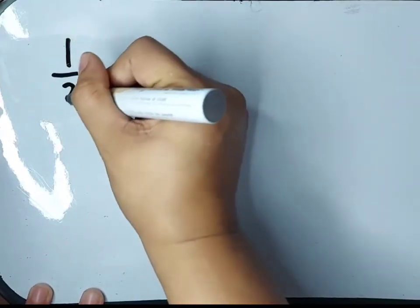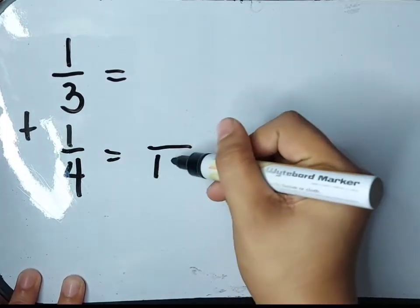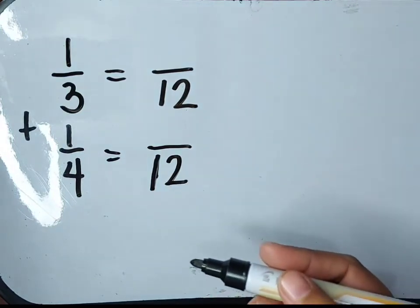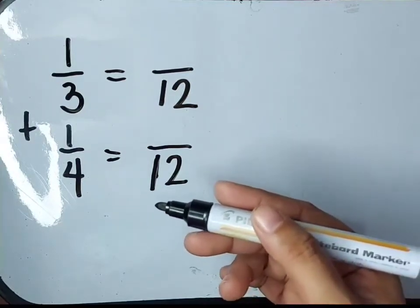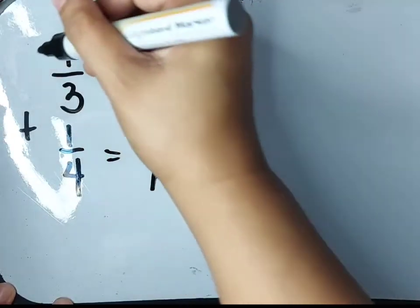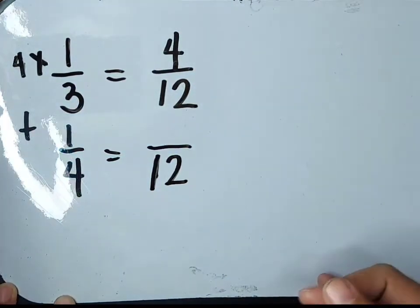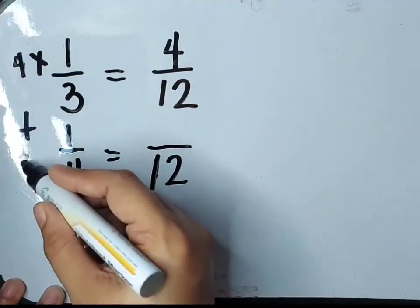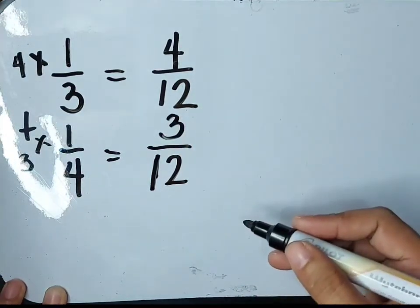Since we already know the LCM of our given fractions, which are 1 third plus 1 fourth, let's use 12 as their common denominator. Let's change the given fractions to their equivalent similar fractions by dividing the LCD by the denominator, then multiplying the quotient by the numerator. 12 divided by 3 equals 4, times the numerator 1, we have 4. 1 third will now become 4 over 12. 12 divided by 4 equals 3, times the numerator 1, equals 3. So 1 fourth will now become 3 over 12.